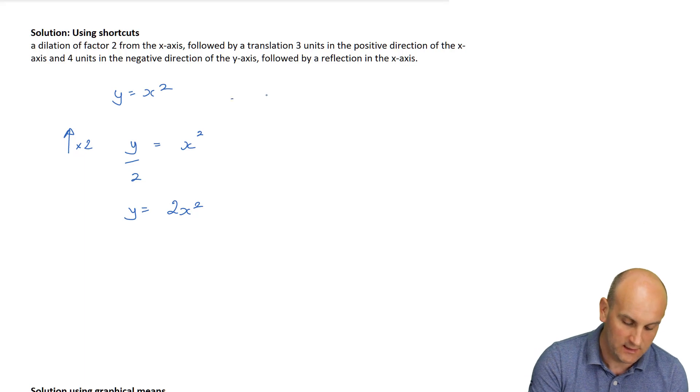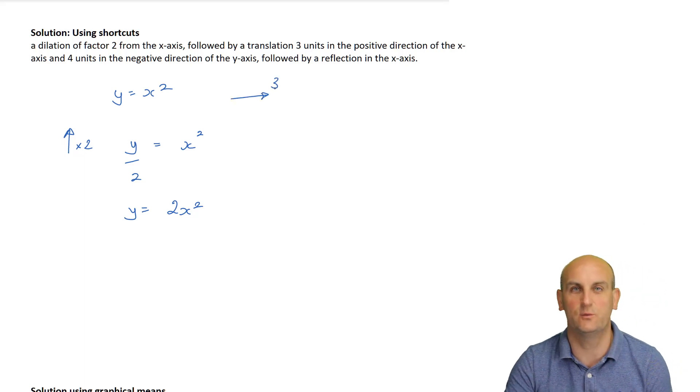Simplifying this is now going to give me y was equal to 2x squared. Right, that's the first one. Then it says, followed by a translation of 3 units in the positive direction of the x-axis. We know that when we do that, we're replacing x with x minus h or k, I can't remember which letter was, and where k or h or whatever letter it is, is the positive value. So in that situation, I'm now going to replace x with x minus 3.